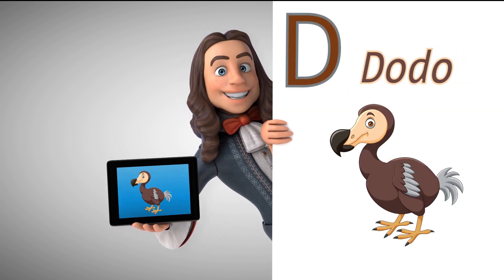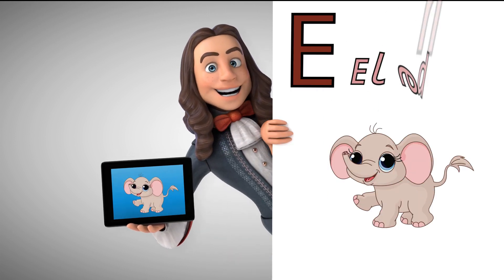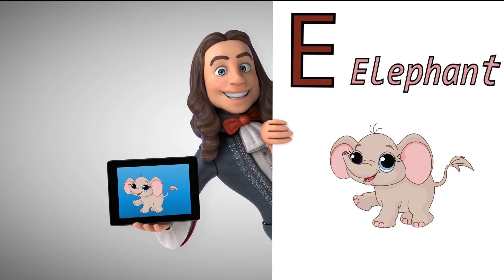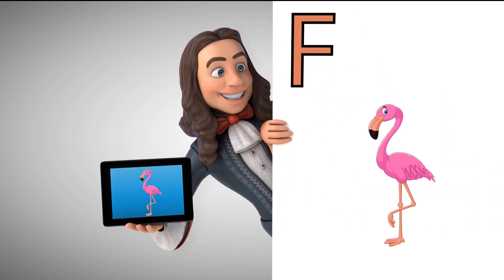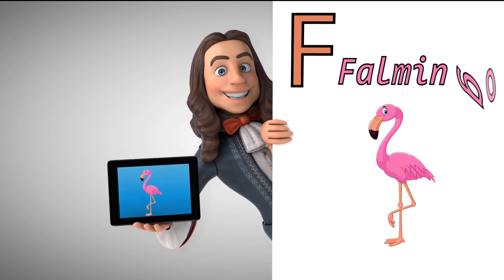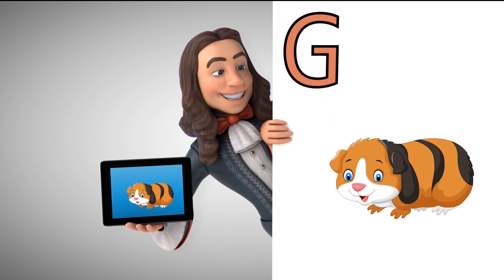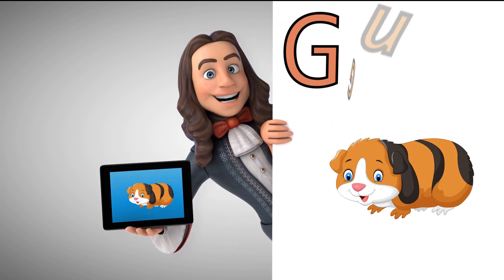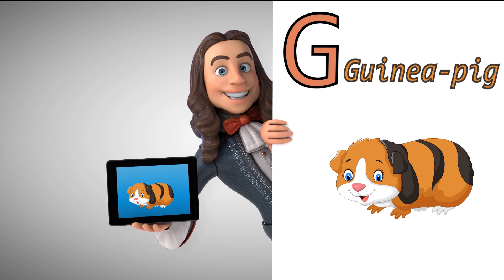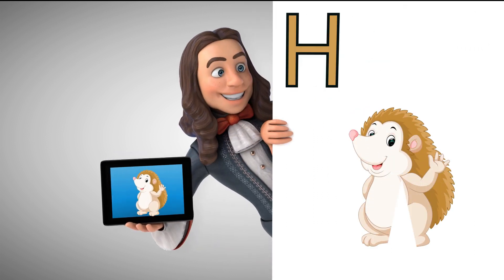D is for Dodo. E is for Elephant. F is for Philomingo. D is for Guineapig.